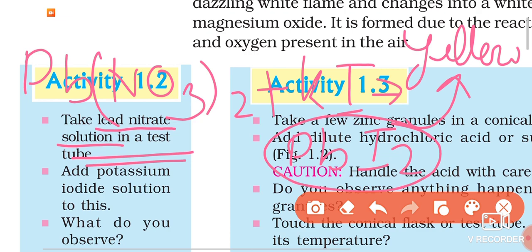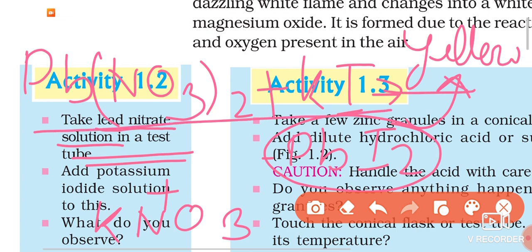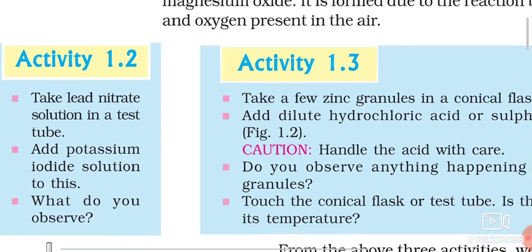This yellow precipitate is lead iodide, PbI₂. The appearance of yellow color in the test tube indicates that a chemical reaction is taking place. Along with lead iodide, another substance — potassium nitrate, KNO₃ — is also formed. The chemical reaction is: Pb(NO₃)₂ + KI → PbI₂ + KNO₃. The color change to yellow is how you identify the reaction.